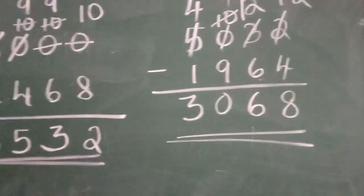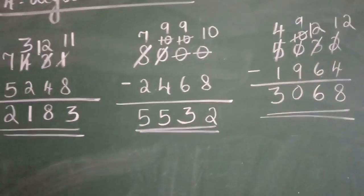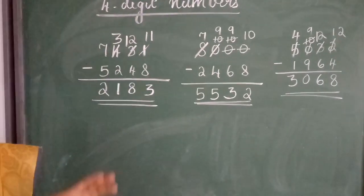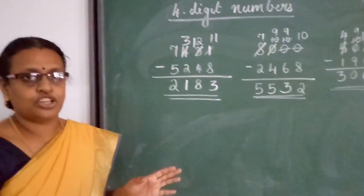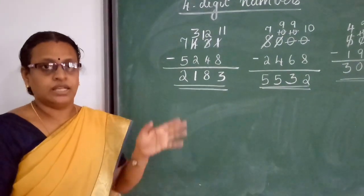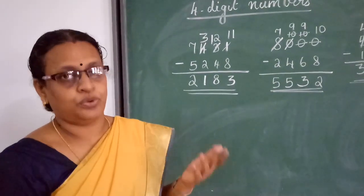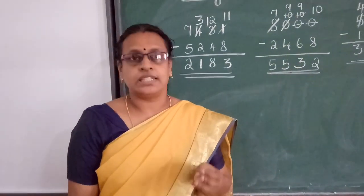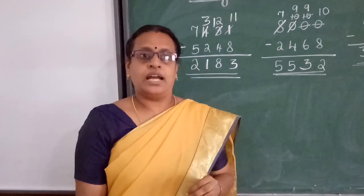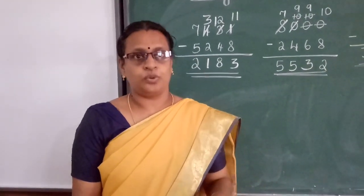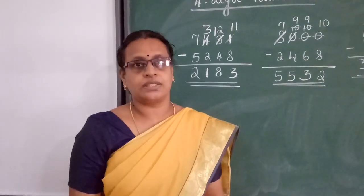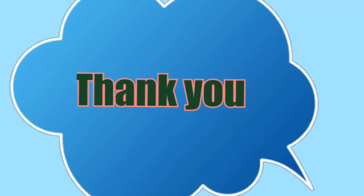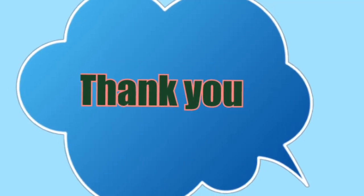Now, to summarize: in this chapter, we studied how to do subtraction — subtraction of 4-digit numbers, and 3 digits from 4 digits. Do the sums in the textbook and write the notes in the notebook. This is the end of Module 3. Thank you.